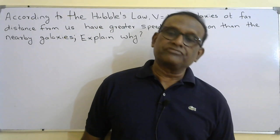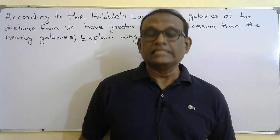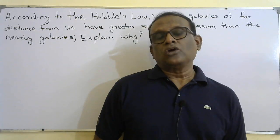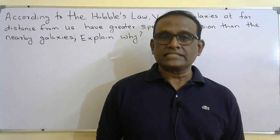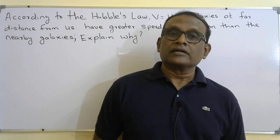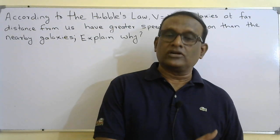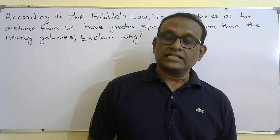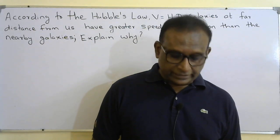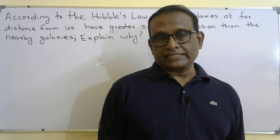This question is based on Edexcel IAL unit 5 cosmology. We learn Hubble's law: V equals H0 times D. When the distance of a galaxy from us increases, the speed of recession increases. The speed is measured using redshift of absorption spectrum and the Doppler effect. The distance of a galaxy is measured either by trigonometric parallax or by using Cepheid variables as standard candles.